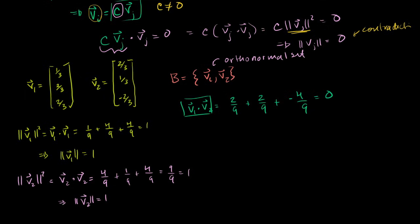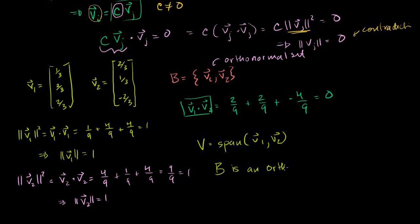And if we have some subspace V equal to the span of v1 and v2, then we can say that B is an orthonormal basis for V.